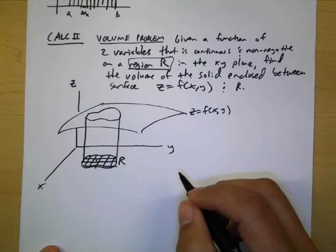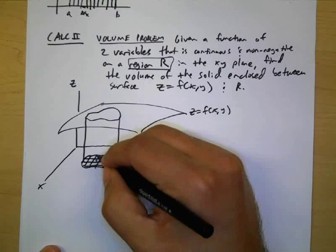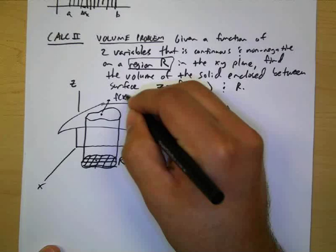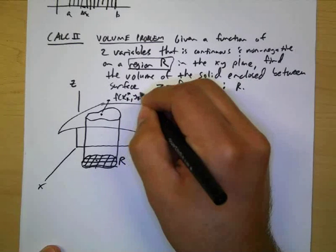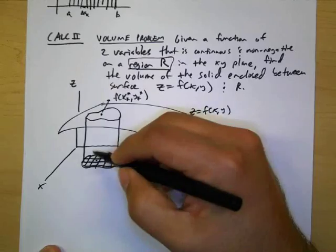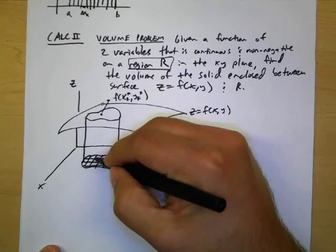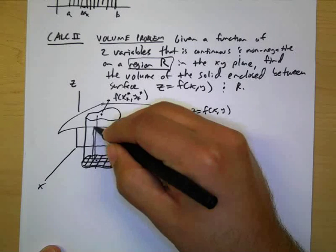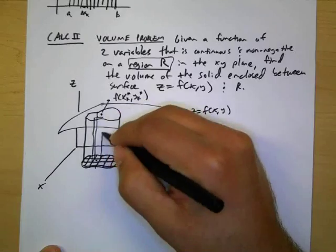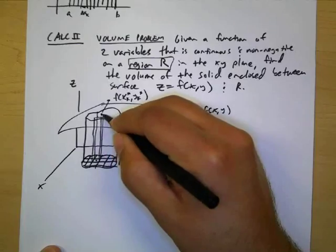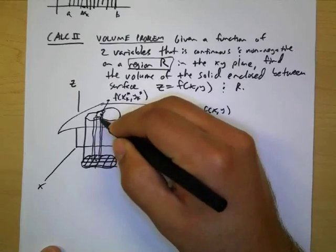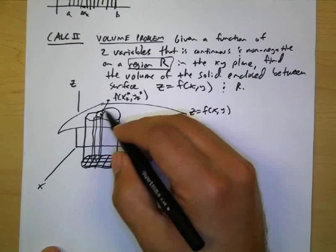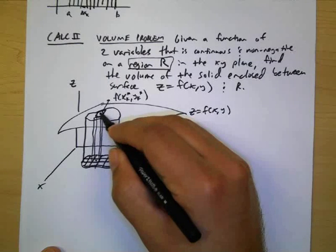So that now this point corresponds to f of x sub k star and y sub k star and we form a parallelepiped. This is not the world's greatest picture I apologize. It's just a prism with parallelograms as bases.